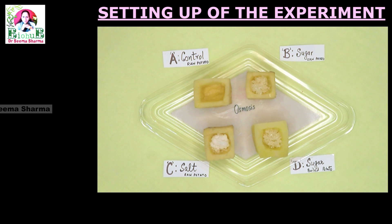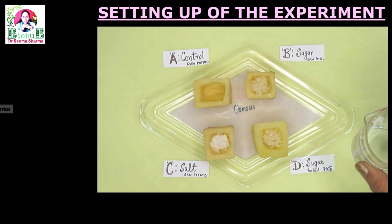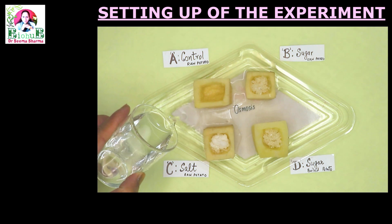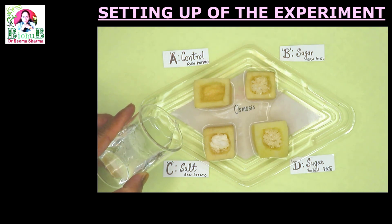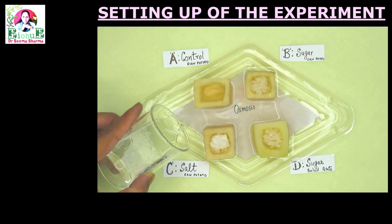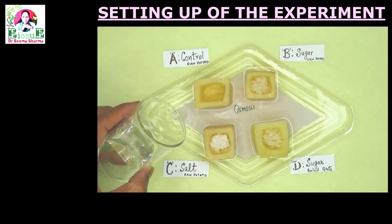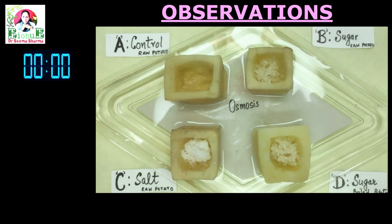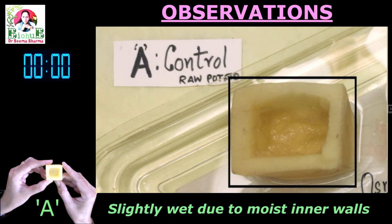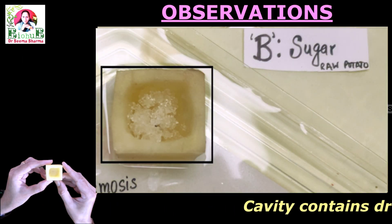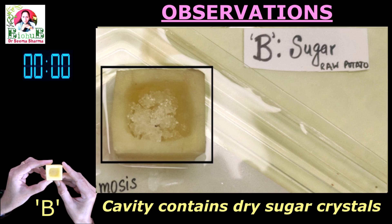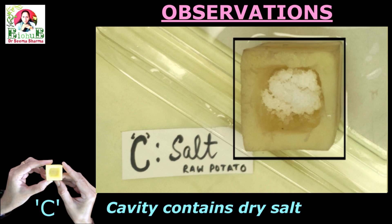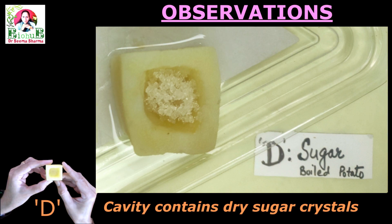Gently place all the cups into one shallow tray. Pour distilled water into the tray — the water level should be one third of the height of the potato cups. Note the observations immediately after setting up the experiment. Potato cup A is wet slightly. Potato cup B: sugar crystals are intact. Potato cup C: common salt is in powdered form only. Potato cup D: no visible change in sugar crystals.